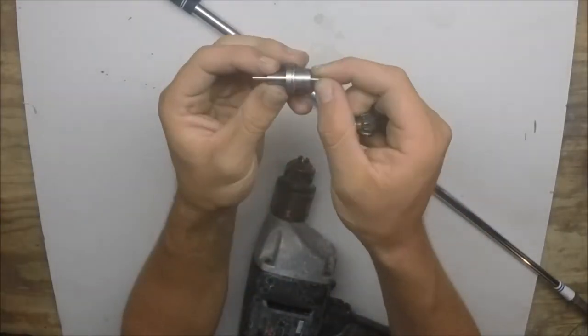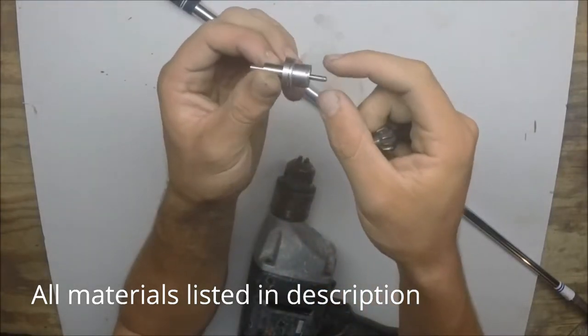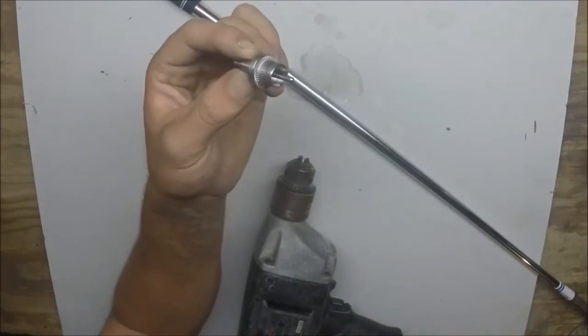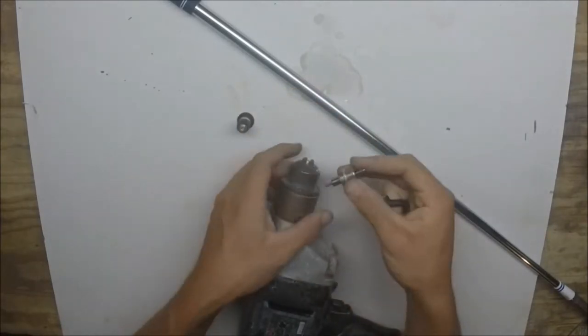is a drill bit they sell on GolfWorks.com. It's basically a friction drill that'll drill a perfect hole in the end of the grip so that you can put the actual weight in.